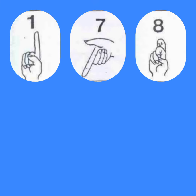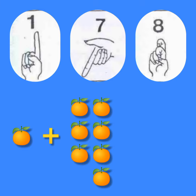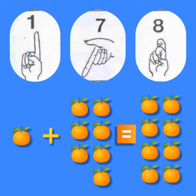Question number eight. One orange plus seven oranges equals to eight oranges.